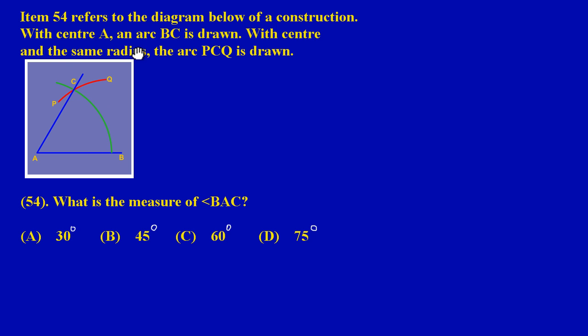If you notice, we have the green line here representing that arc BC that they have stated. So this is my center, and I've positioned my compass at A and I've drawn that arc BC. With center B and the same radius, the arc PCQ is drawn.